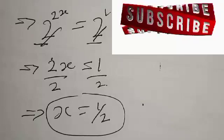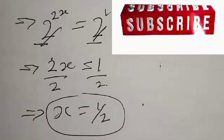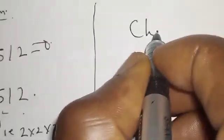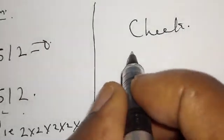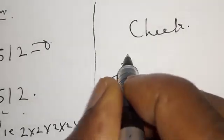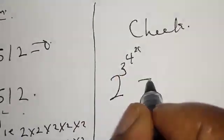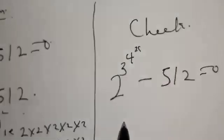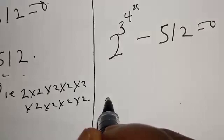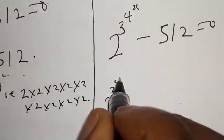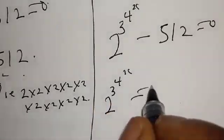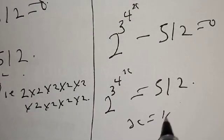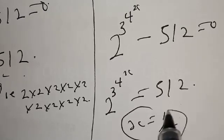Now let's check to confirm if our answer is right. We have 2 raised to power 3 raised to power 4 raised to power x, minus 512, is equal to 0. This implies that 2 raised to power 3 raised to power 4 raised to power x is equal to 512. Now we said x is equal to 1 over 2.